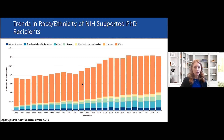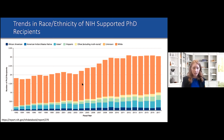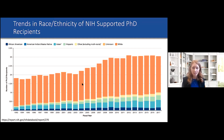Looking more specifically at the NIH-supported workforce, we have a snapshot of data for NIH-supported PhD recipients — those supported on trainee grants, our F and T mechanisms. While we are seeing an increase in the overall absolute numbers, the proportion of those funded by race and ethnicity has not really changed that much over the last several years.